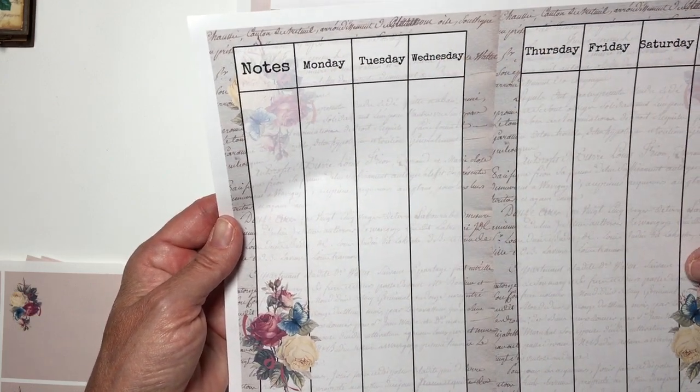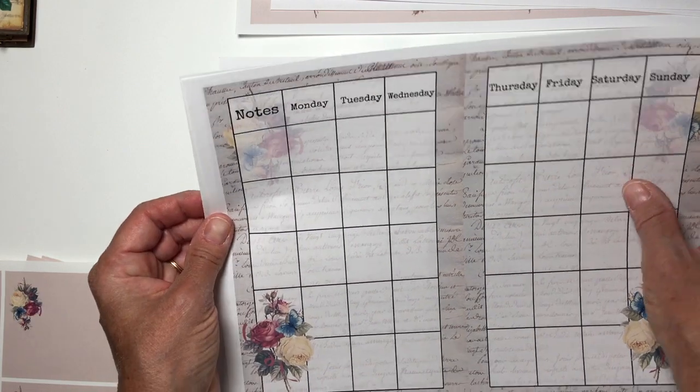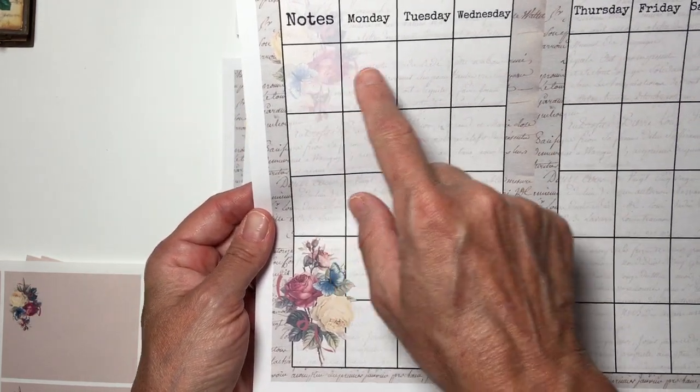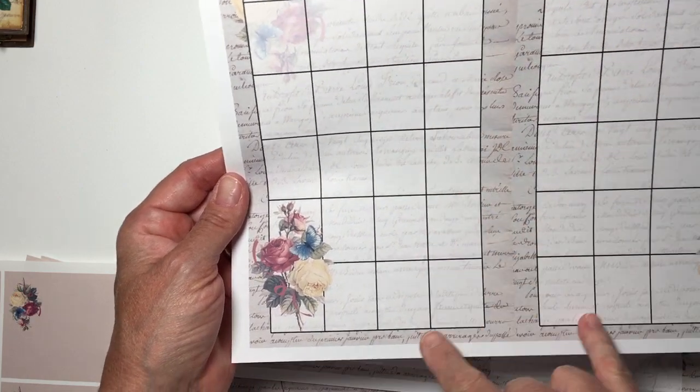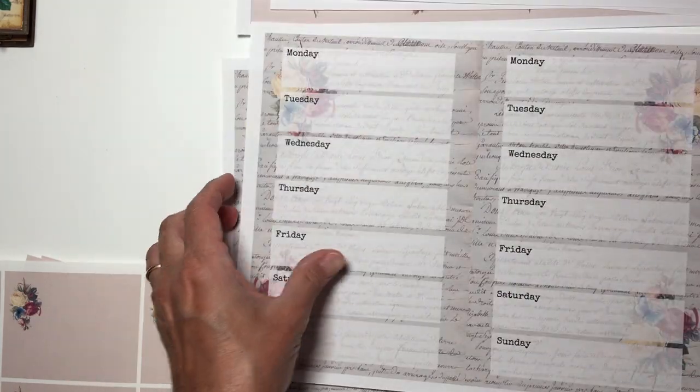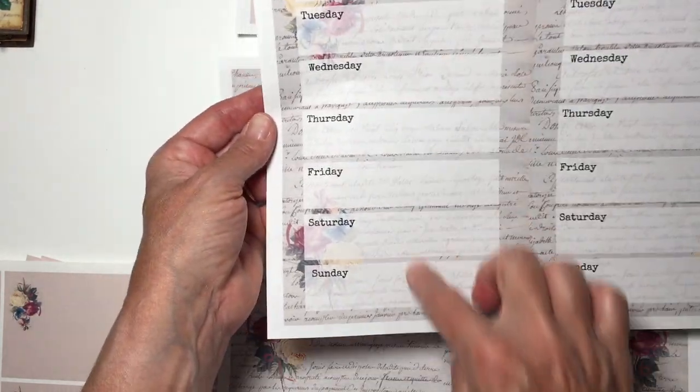This is the whole week across. This is a month at a glance where you have Monday through, and you have five weeks so you'd be able to put your own numbers in here. Here's one where it's a week on a page.